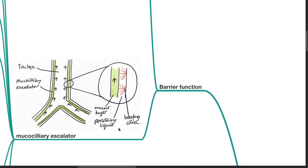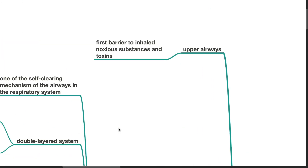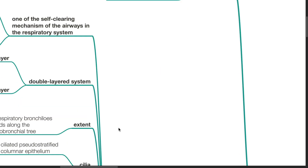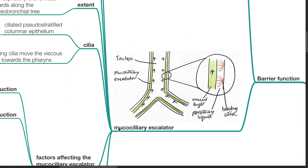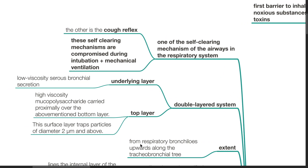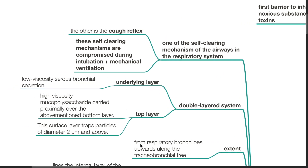Barrier function of the lung. The upper airways are the first barrier to inhaled noxious substances and toxins. Mucociliary escalator is one of the self-clearing mechanisms of the airways in the respiratory system. The other is the cough reflex. These self-clearing mechanisms are compromised during intubation and mechanical ventilation.